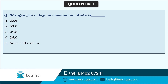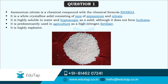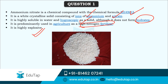The first question asks: what is the nitrogen percentage in ammonium nitrate? The correct answer is 33%. Ammonium nitrate has the chemical formula NH4NO3. It is a white crystalline solid consisting of ammonium and nitrate ions, highly soluble in water and hygroscopic as a solid, although it does not form any hydrates. It is predominantly used in agriculture as a high-nitrogen fertilizer and is highly explosive if not stocked properly.